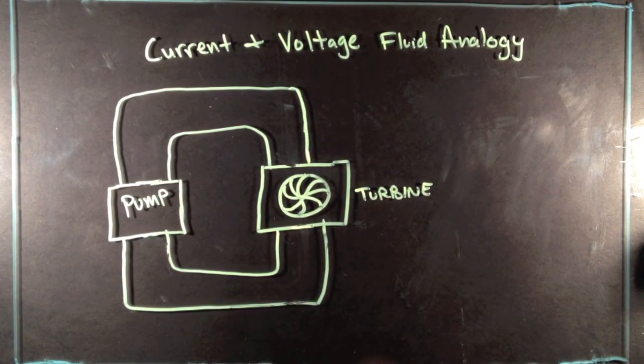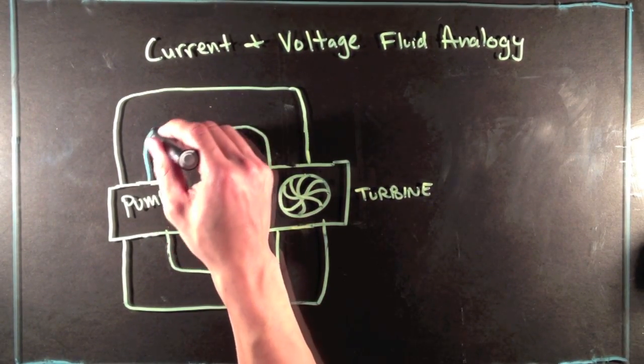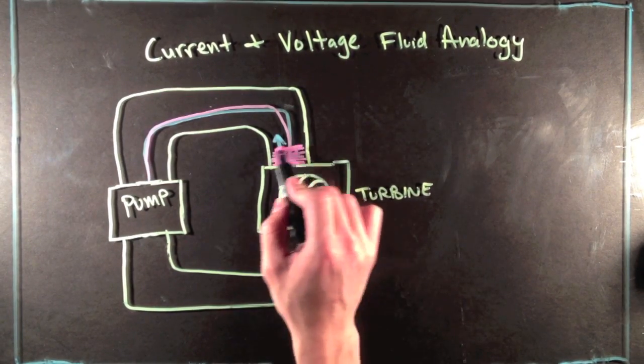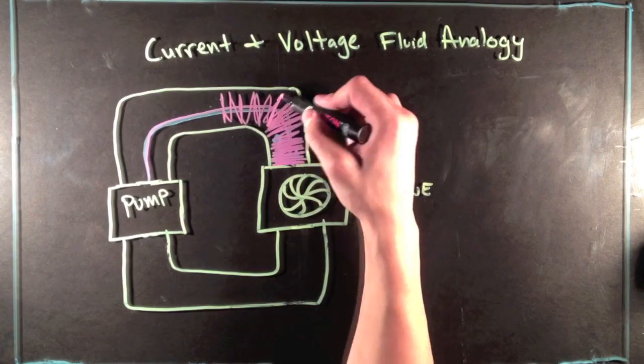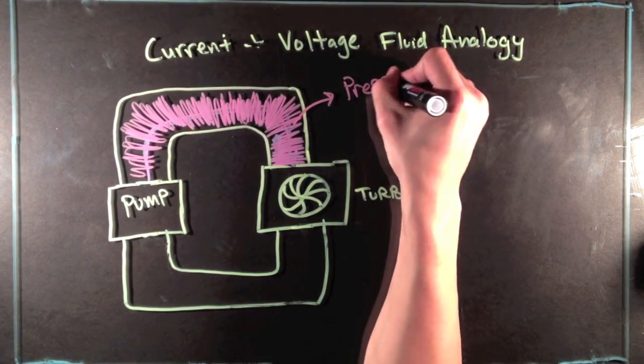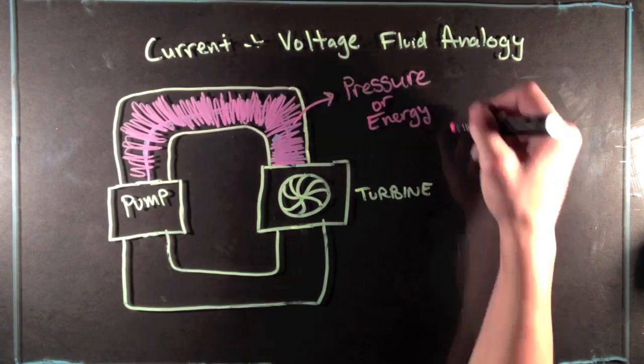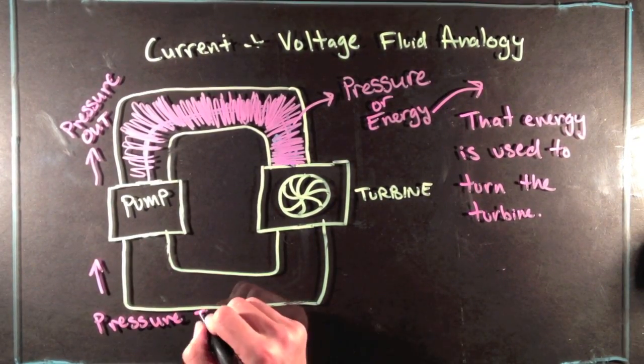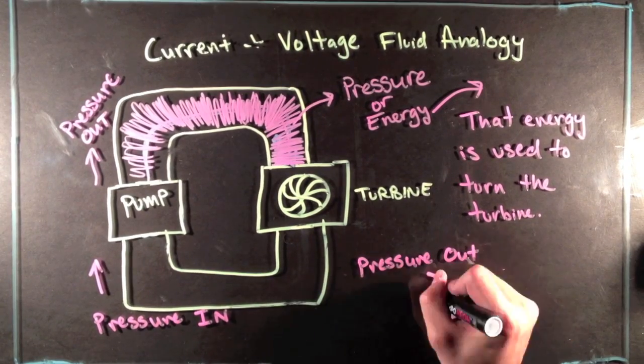Now, let's take a look at when we first turn this system on. Water is going to start flowing out of the pump, and it's going to hit the turbine. But the turbine isn't going to start turning right away. There needs to be a pressure buildup between the pump and the turbine in order for it to turn. Now, once that energy is used by the turbine, the water is going to come out of the turbine to the pump with little or no energy. So, the pressure out is greater than the pressure in.